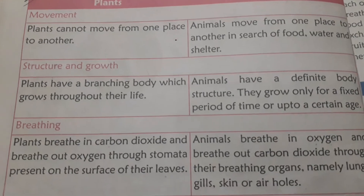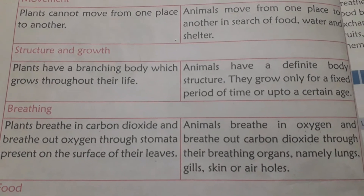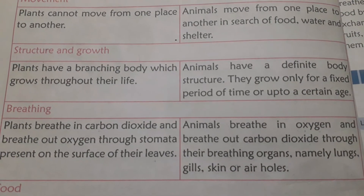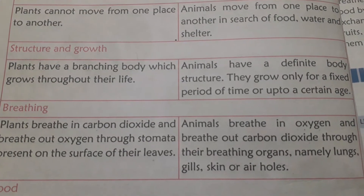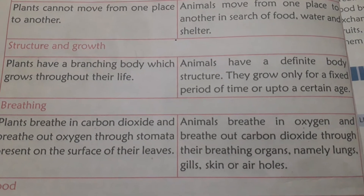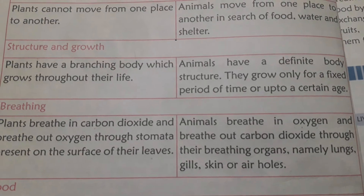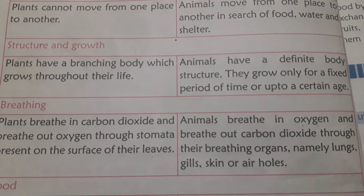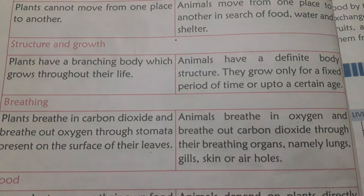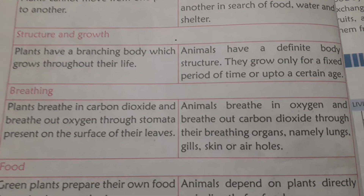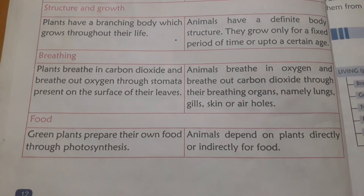The next differences are structure and growth. Plants have a branching body which grows throughout their life. Animals, on the other hand, have a different body structure — they grow only for a fixed period of time or up to a certain age.